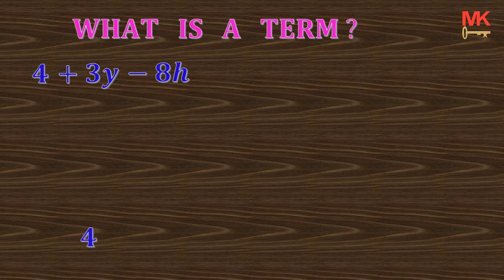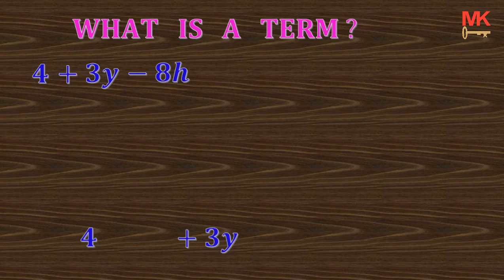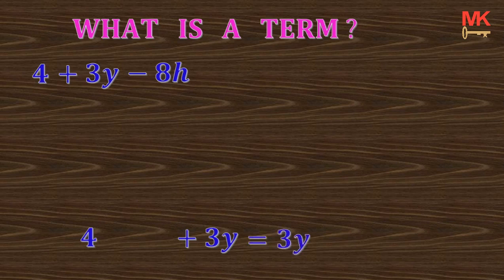The second term is your positive 3y. In mathematics, whenever any number or letter or any term carries a positive operation at the front, that term can be written without the operation. So your positive 3y can be written as ordinary 3y. And the last term here is negative 8h.